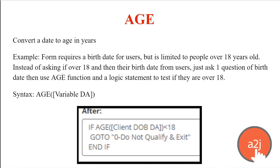This is the age function — we saw that in the first slide about using it in logic. This function allows you to convert a date to an age in years. For example, the form requires a birth date for users but is limited to people over 18 years old only. Instead of asking the successful end user if they're over 18 and then their birth date, you can just ask everyone the one question about their birth date, and then use the age function and a logic statement to test if they're over 18. It saves the end user from answering that additional question. The syntax is: age, parentheses, bracket, name of the variable, close bracket, close parentheses.